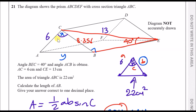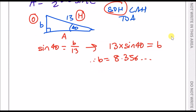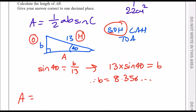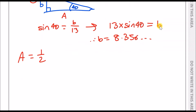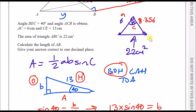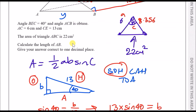Now we're going to try and find angle X. Updating the triangle: CB is 8.356. Recalling that the area of triangle ABC is 22, we substitute into the area formula: 22 equals half times 6 times 8.356 times sine X. So all we need to do is simplify and solve for sine X.